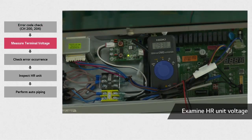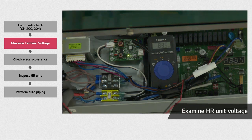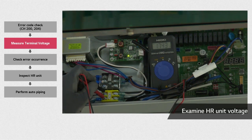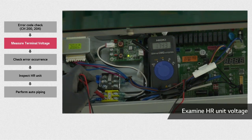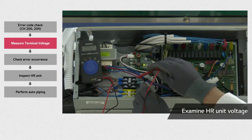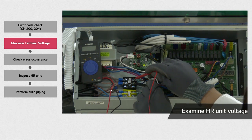To solve this error, start by measuring the voltage of the communication terminals A and B of the HR unit. These terminals connect the HR unit with the outdoor unit. The normal range should be between 1 and 5 volts. For the power terminal, 220 volts is considered to be normal.